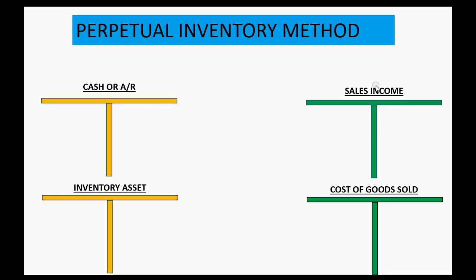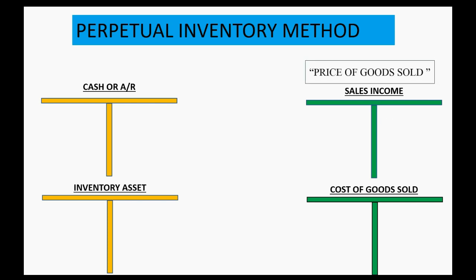Now, in the top right here, we have our sales income account. This is very similar to the service income account that we were using in previous videos. You record a credit for what the customer gives you because that's the income that you earned. Previously, we made a credit for the price of the service when the customer paid us. So now, when we deliver the goods, we make a credit to sales income for the price of the goods that are sold — because that's the income we earned — and that's a T-account just like service income.